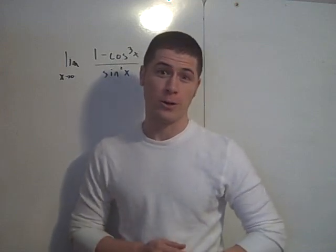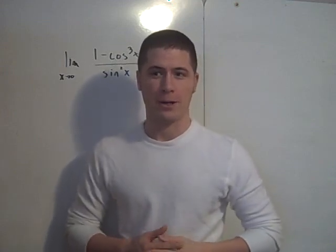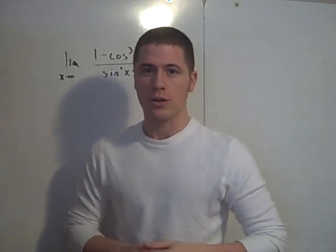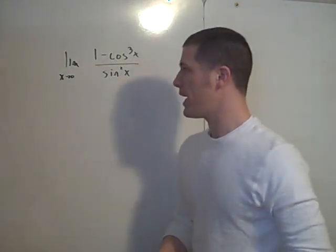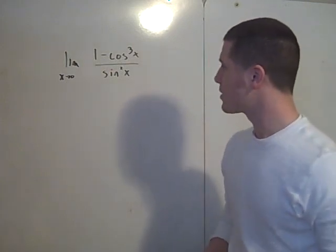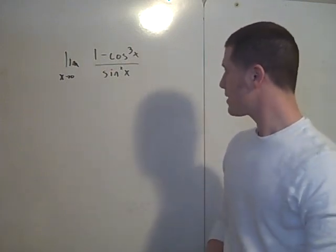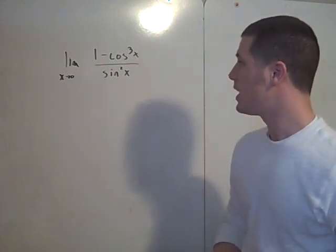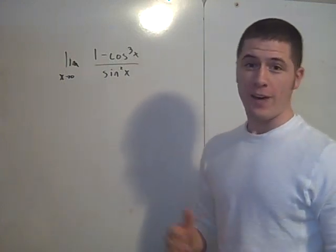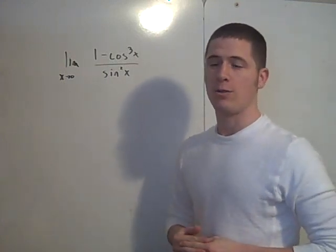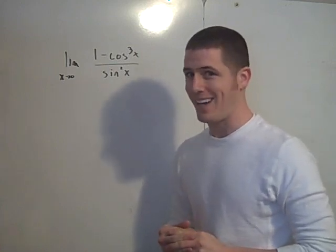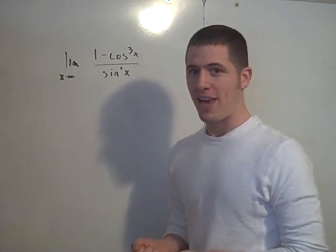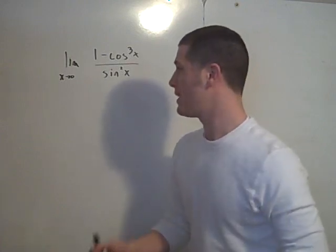This will be a short tutorial video on how to compute some limits with trigonometric functions. Here is the limit as x goes to 0 of 1 minus cosine cubed x over sine squared x. For this one, you have to factor the numerator and use a trigonometric identity for the denominator, specifically the Pythagorean trigonometric identity.